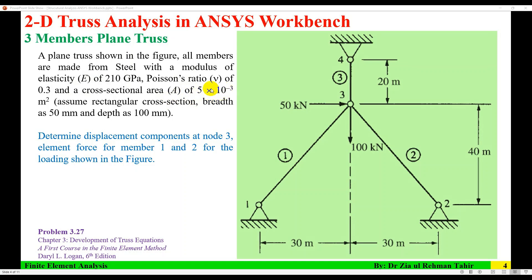The cross-sectional area is 5×10⁻³ m². Although the dimensions are not fully realistic, I have assumed a rectangular cross-section with a breadth of 50 mm and a depth of 10 mm. We are required to determine the displacement components at node 3 and the axial member forces for members one and two. This is a modified version of Problem 3.2 from Chapter 3 of 'A First Course in Finite Element Method' by Daryl Logan.